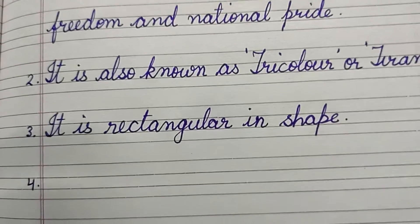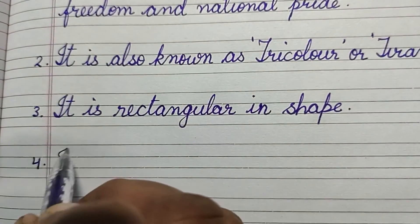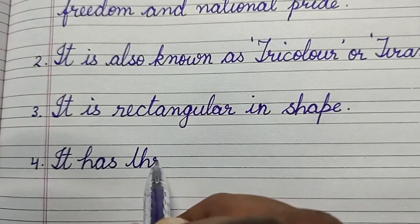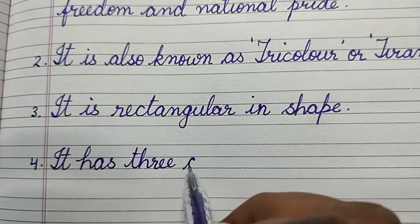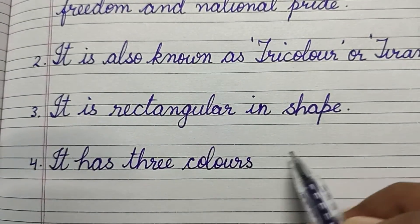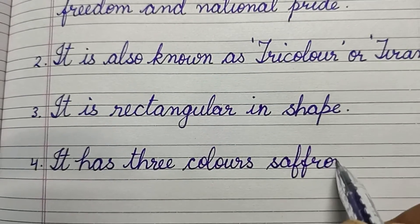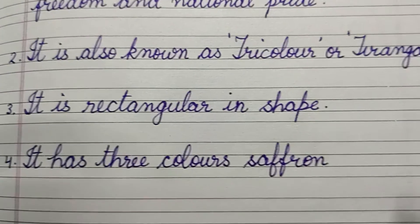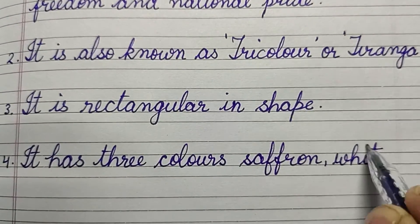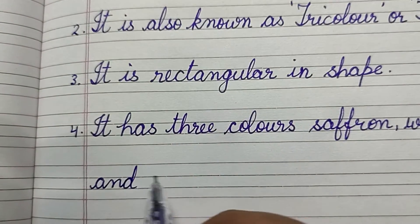Line number four: It has three colors - saffron, white, and green.